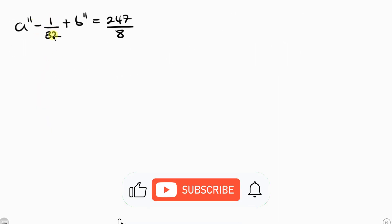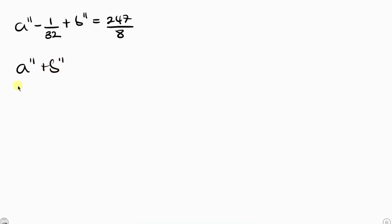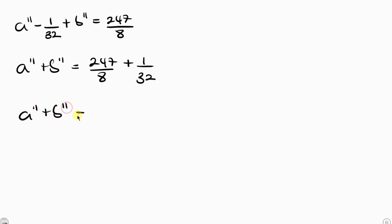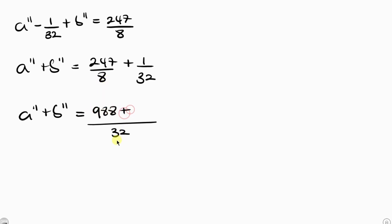Moving negative 1 over 32 to the right, a to the power 11 plus b to the power 11 equals 247 over 8 plus 1 over 32. Finding the LCM of 8 and 32, which is 32: that gives 988 over 32 plus 1 over 32, which equals 989 over 32. And there you have it.